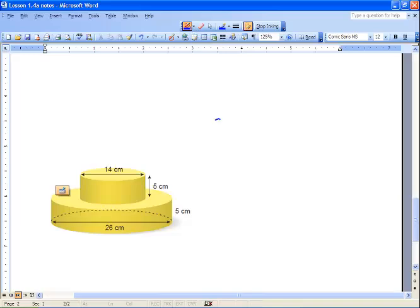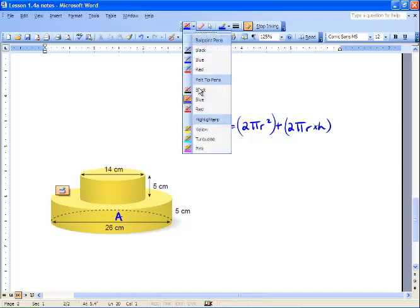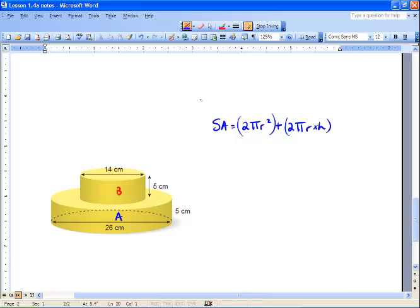And this is just like wedding cakes. So we're going to go surface area equals 2 pi R squared, which is our top and bottom, plus 2 pi R times H. So we're going to do our bottom one first. We'll do that in blue. And our other one is going to be B. So A, we've got 2 times pi times our radius, which is half of our diameter, which is 13 squared. Plus our side. So we've just done the bottom and the top. And now we're going to do our side, which is 2 times pi, times R, which is 13, times our height, which is 5.